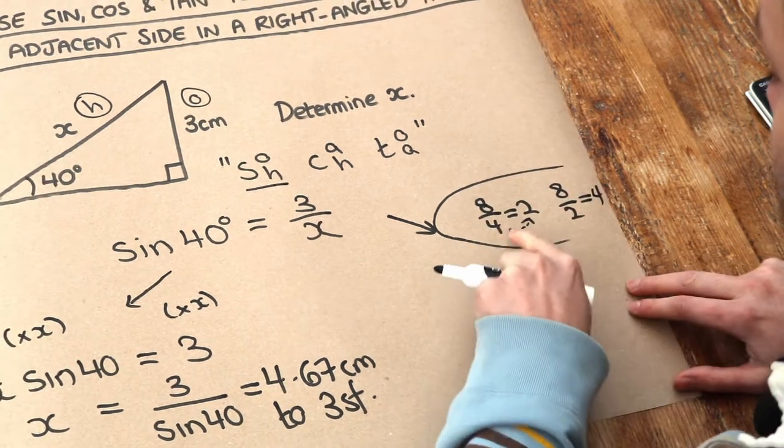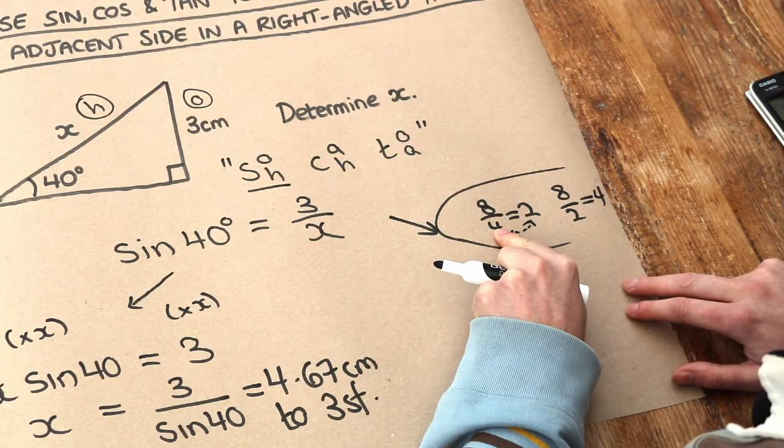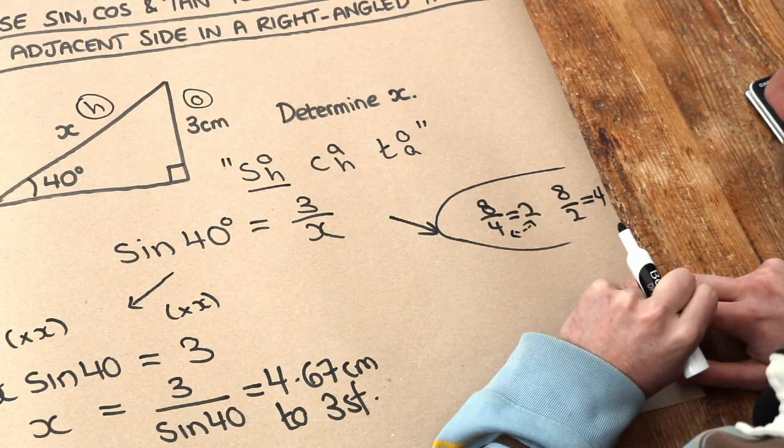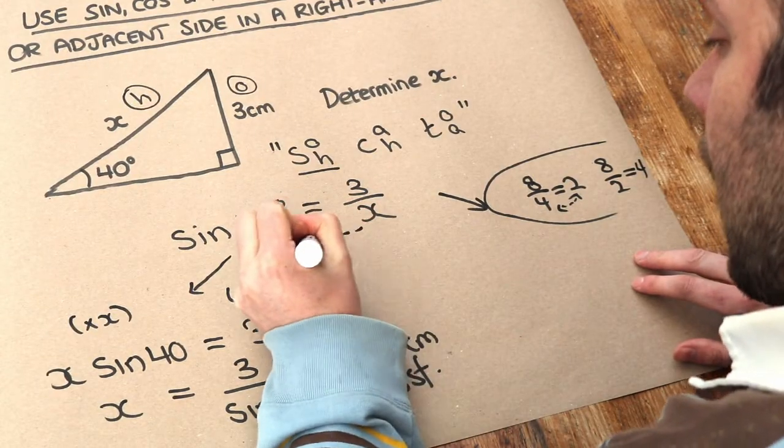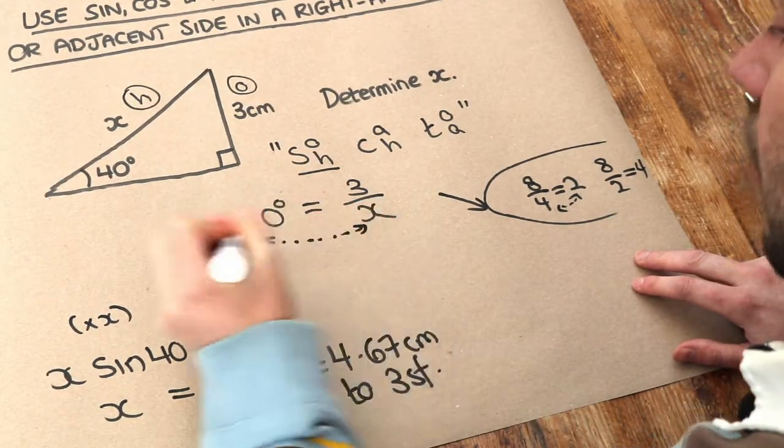So in general, you can swap the thing you're dividing by in a division, and the result of that division. So if we do that here, we can swap the thing we're dividing by, the sine of 40, and the result of that division, the sine of 40.